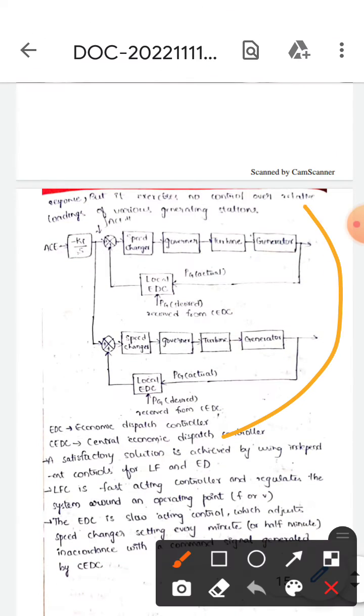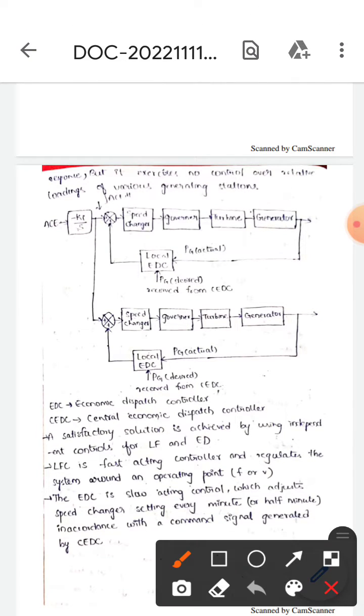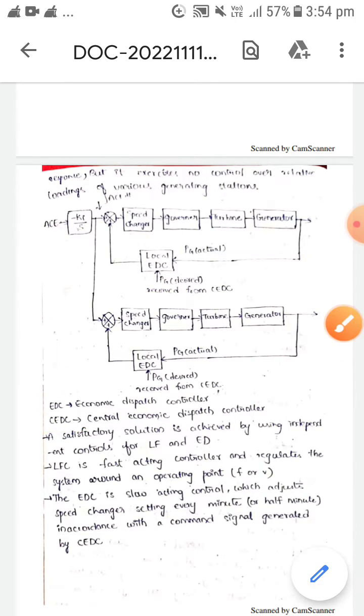If you observe here, this is the block diagram that represents correlation between LFC and economic load dispatch controller. EDC means economic dispatch controller, whereas CEDC means central economic dispatch controller.